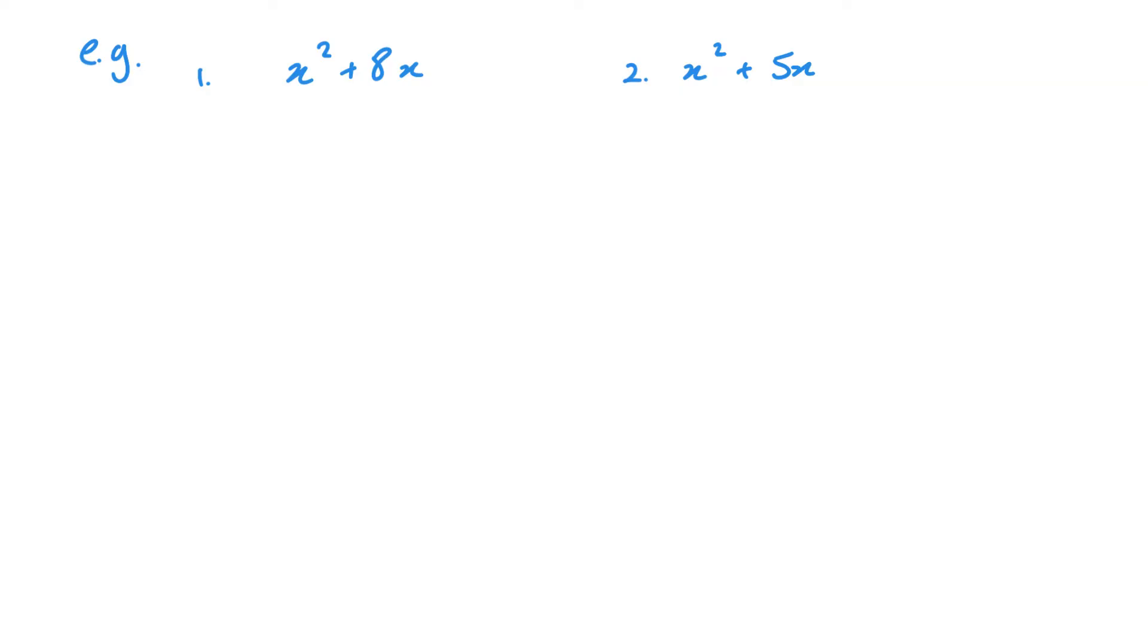You can see that this first one is very much like what we were just looking at: x squared plus 8x. The way I approach it is very simple. What I want is x plus half of this value squared. I always have to remember when I expand this, I get x squared, I get my 8x, but I also end up with 16. So I need to take away that. So this leaves me with x plus 4 squared minus 16.